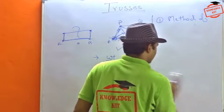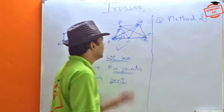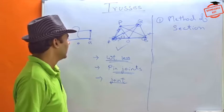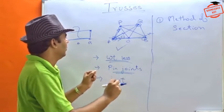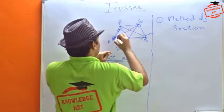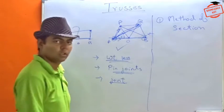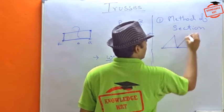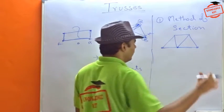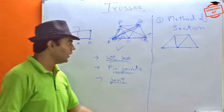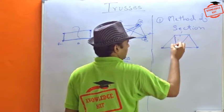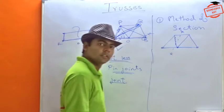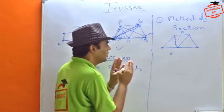So this is the first method, that is the method of joints. The next one is, which is the more convenient one, because the method of joints can be very lengthy. The other method is method of section. In our university questions, we will be asked to find force or the weight or load on, suppose this member. Only about this member. So what we do is, we draw the entire structure. Suppose this is how our structure is. And we want to find the force F of this member. What we do is, we take a section.